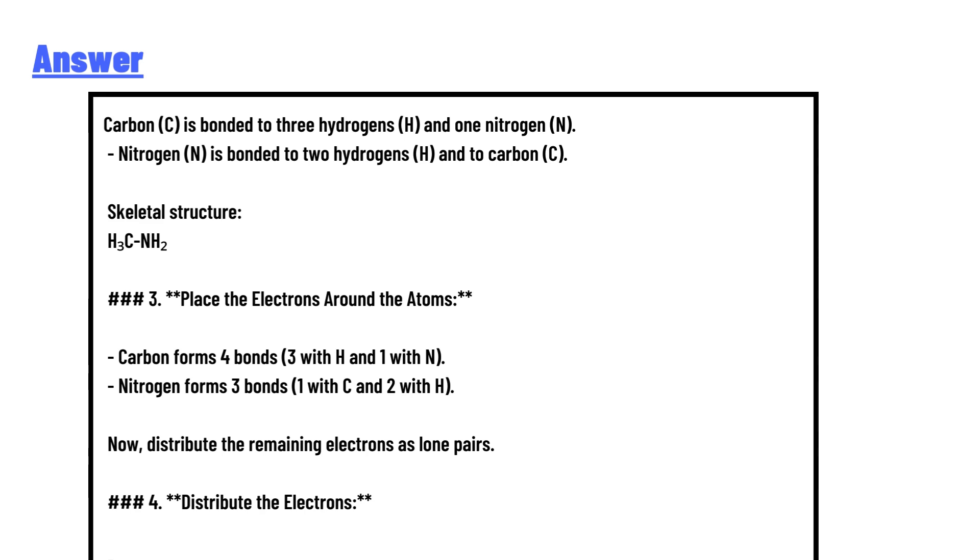Step 4: Distribute the electrons. Now distribute the remaining electrons as lone pairs. Carbon is using all four bonds, so no lone pairs on carbon. Nitrogen will have one lone pair since it is using three bonds: one with carbon and two with hydrogen.